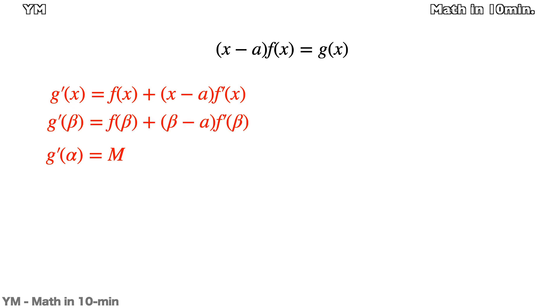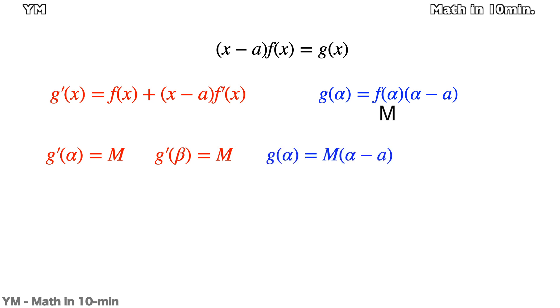Similarly, g'(β) is M as well. Let's also check g(α) and g(β). g(α) is f(α) times (α - a). As f(α) is M, it is simplified to M(α - a).